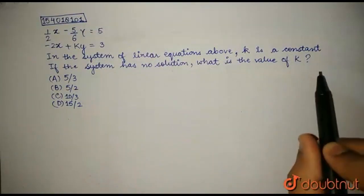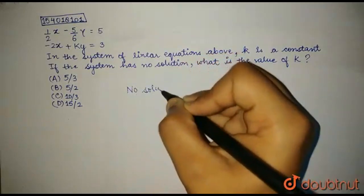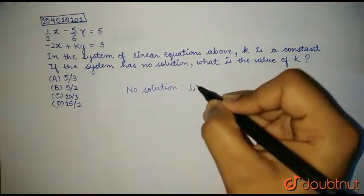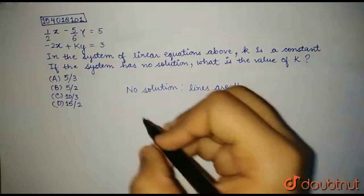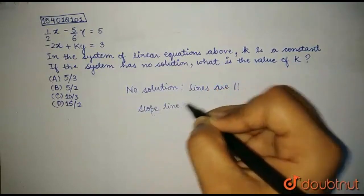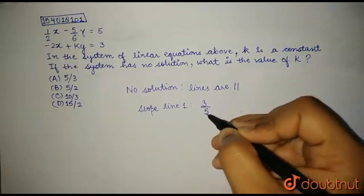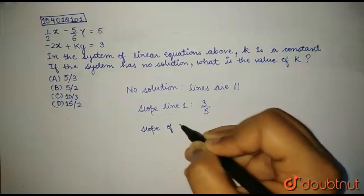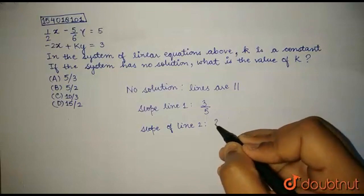What is the value of k? We know that when a system of linear equations has no solution, the lines are parallel to one another. The slope of line 1 is 3 by 5 and the slope of line 2 is 2 by k.